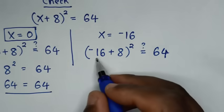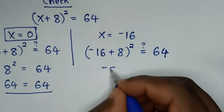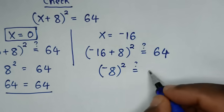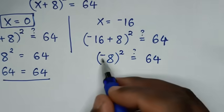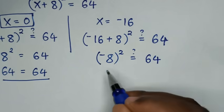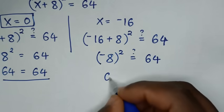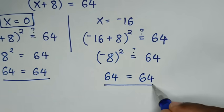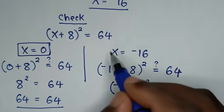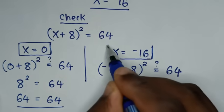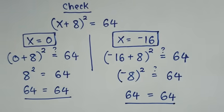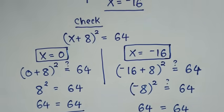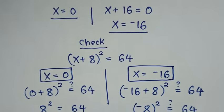Then −16 + 8 = −8, so (−8)² = 64. Negative times negative is positive, so 8² = 64, which equals 64. Left side and right side are equal, so it is also true for x = −16. Thank you. Don't forget to subscribe to my channel, and see you in the next video. Bye bye.